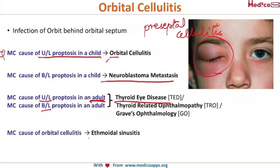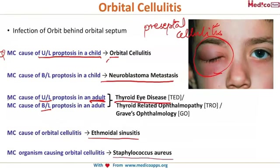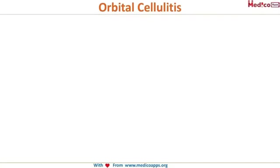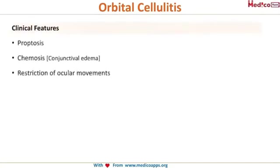The most common cause of orbital cellulitis is infection from the ethmoidal sinus, since the medial wall is the thinnest. The most common organism is Staphylococcus aureus. The clinical features with which the patient presents are: proptosis, chemosis (which is edema of the conjunctiva), and restriction of ocular movements. These are the three main clinical features, along with pain and increased local temperature.